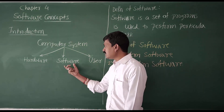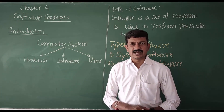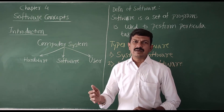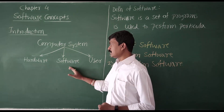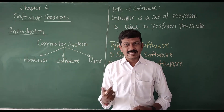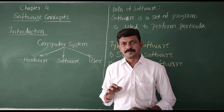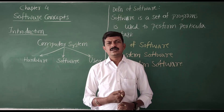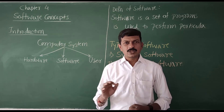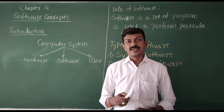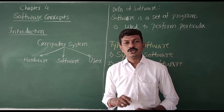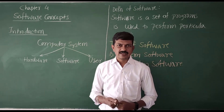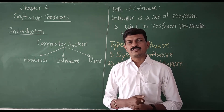Now, the main concept is software. The computer system requires software to function. For example, a computer requires an operating system. Just like a mobile requires an operating system called Android — without Android, you are unable to use that mobile device — in the same way, a computer system also requires an operating system to interact with the user. Examples of operating systems are Windows XP, Windows 7, Windows 10, Fedora, and iOS.